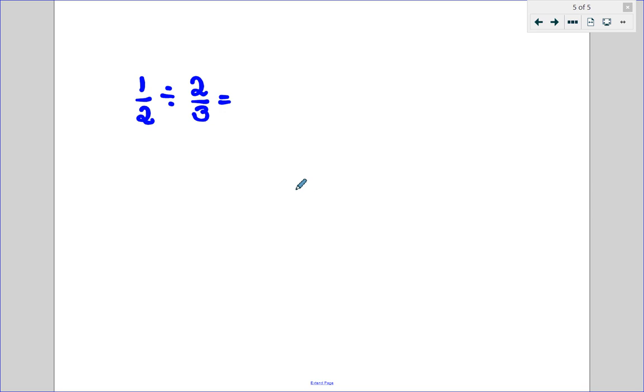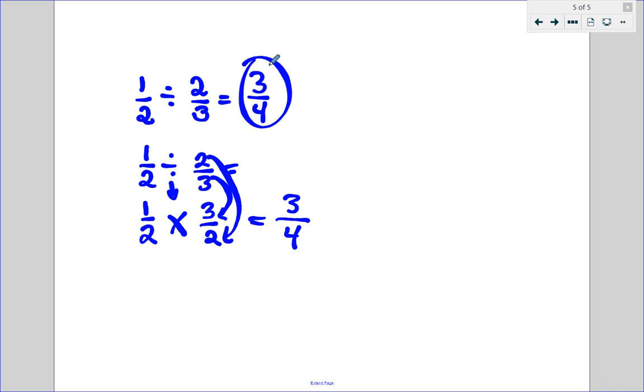Remember in division, you're going to leave the first number the same. What do we need to do first? Change the division to a multiplication sign. So divide becomes multiply. 2 thirds becomes 3 halves. We flip flop them. Now we can do our problem. 1 times 3 is 3. 2 times 2 is 4. So we would say our answer is 3 fourths.